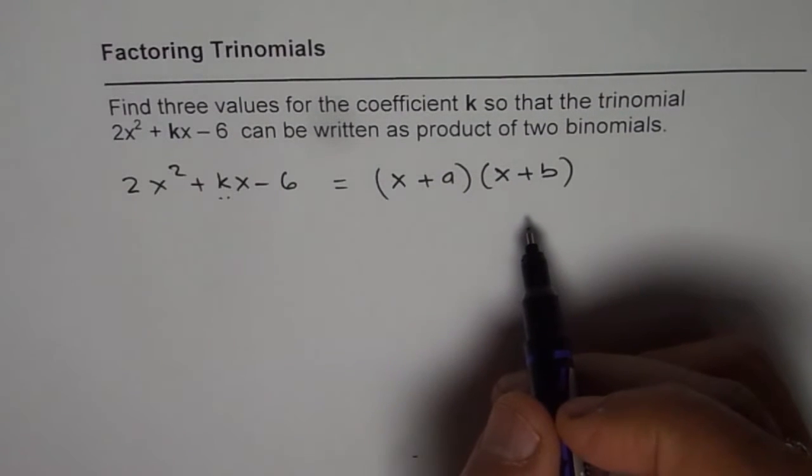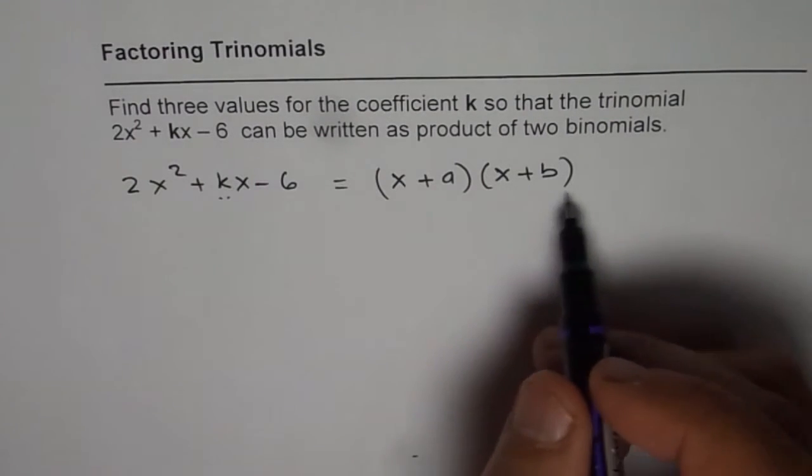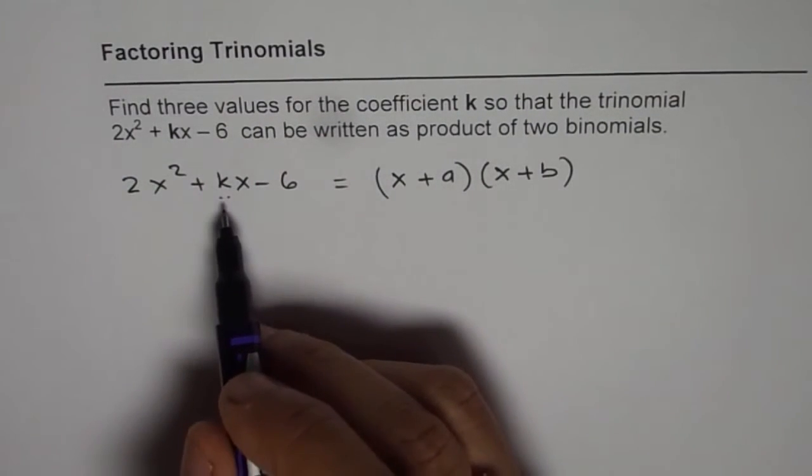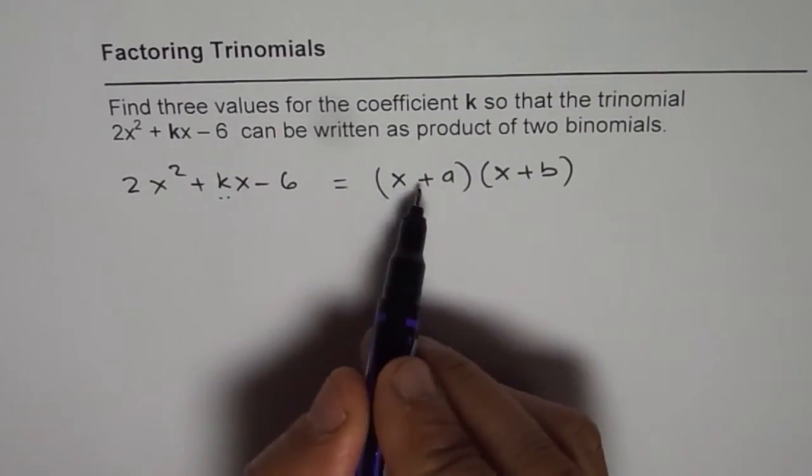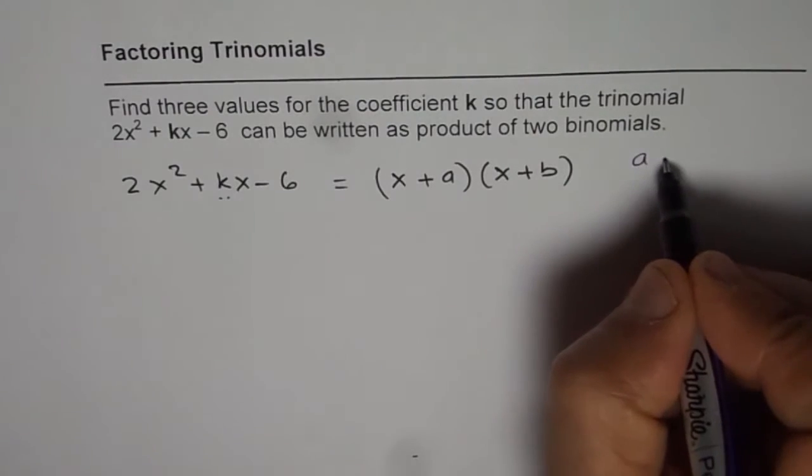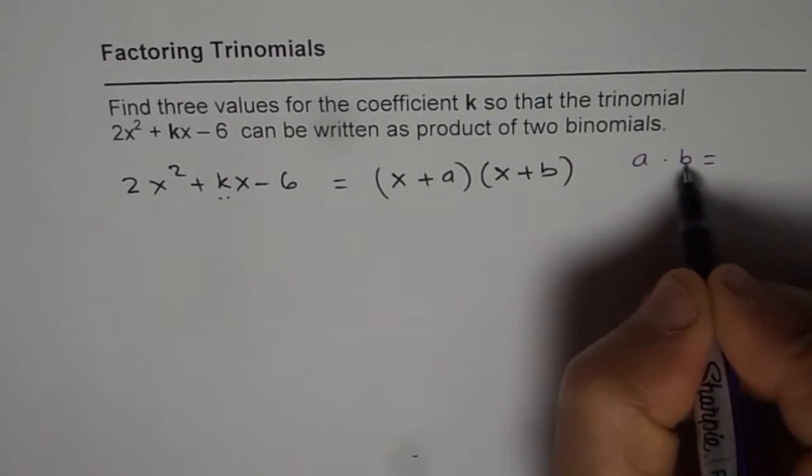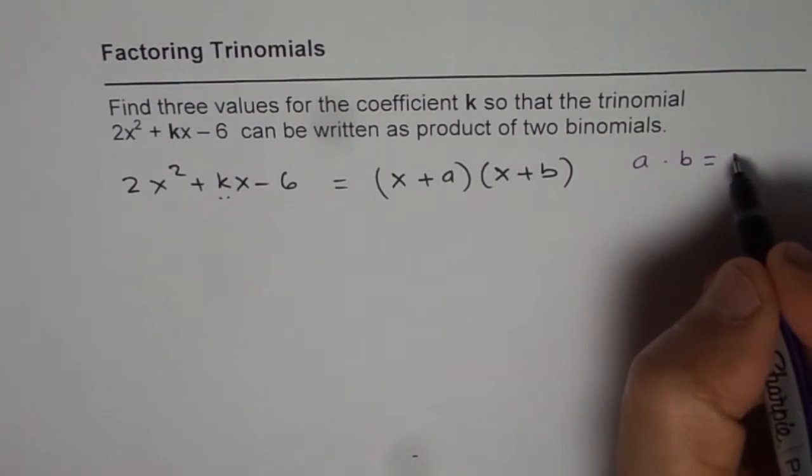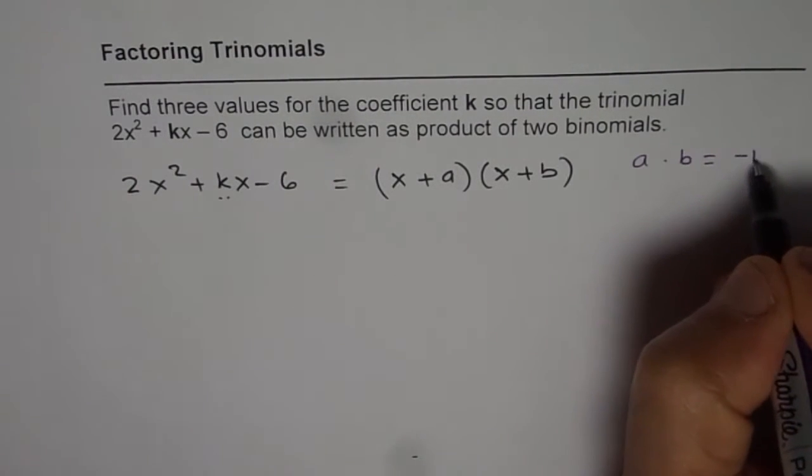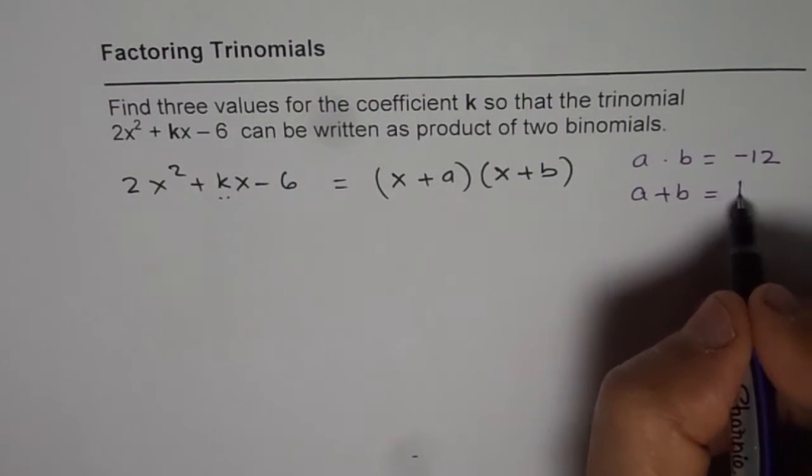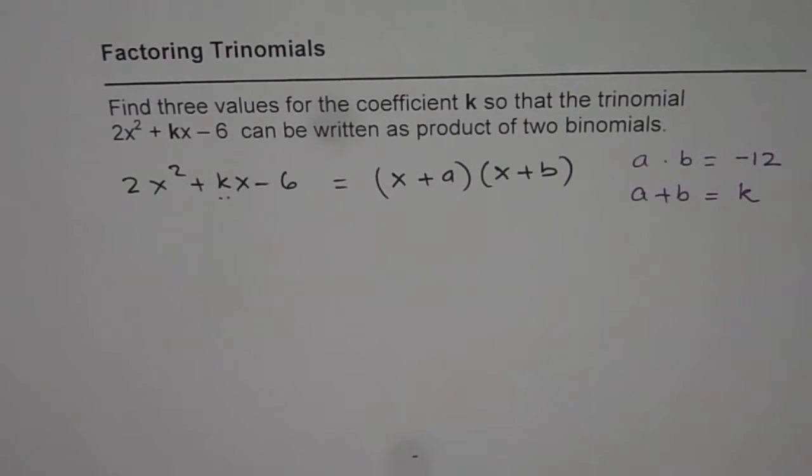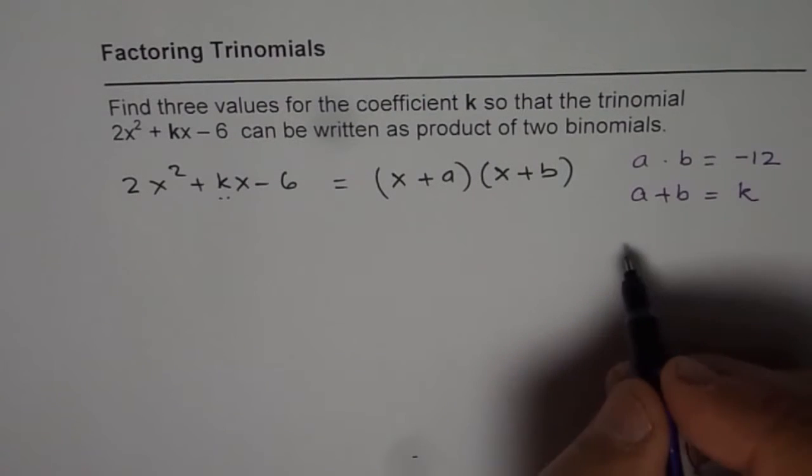Now we will apply product and sum method. Using product and sum we could factor. Now we can apply it in the reverse direction to find the equation. So what we are trying to say here is this is factorable in this form if a·b, the product of a and b is 2 times -6 which is -12. And sum of a and b in that case will be k. Then it is factorable. So what we will do is we will find different factors which can give us -12.